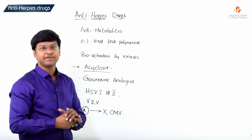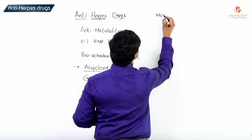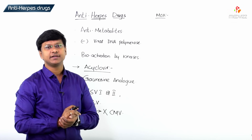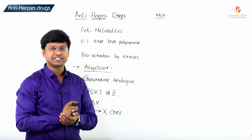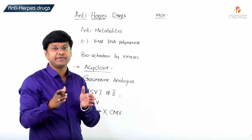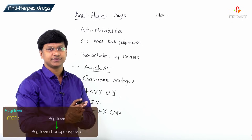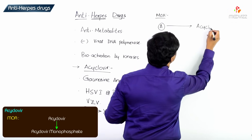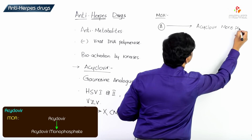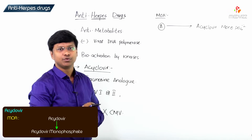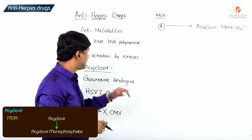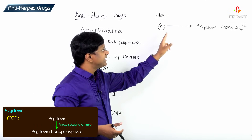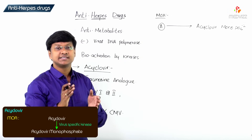Let me explain the mechanism of action of acyclovir. This particular acyclovir is first activated by virus-specific kinases and is converted to acyclovir monophosphate. The virus-specific kinase responsible for this conversion is thymidine kinase.